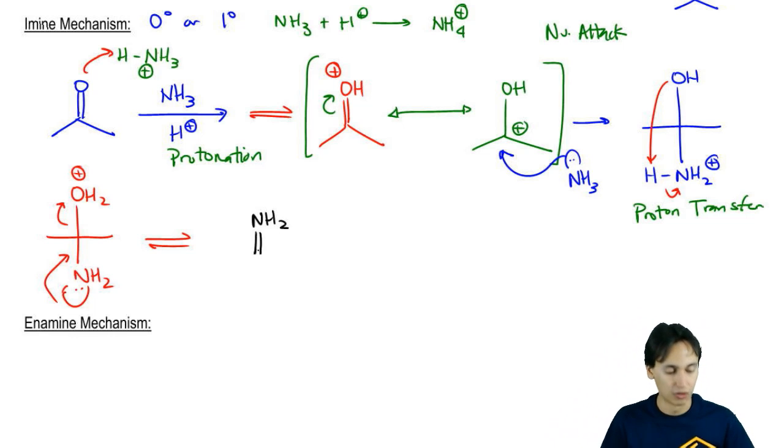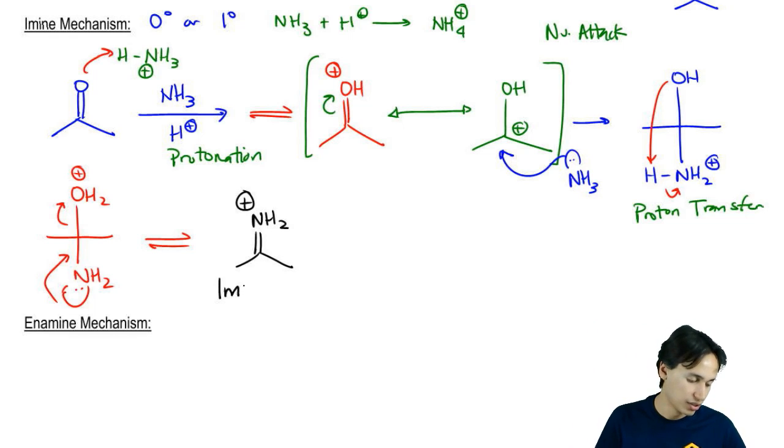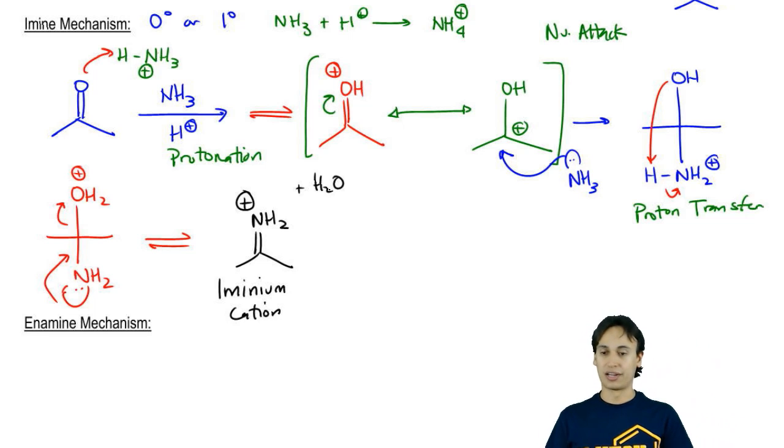It was making a double bond, so I'm going to draw the double bond facing down. There's two R groups, so I'm going to put the R groups facing down with a positive charge. Do you guys recognize this intermediate? This is the iminium cation plus we would also get water leaving. Now that is my compound, that's my iminium cation.